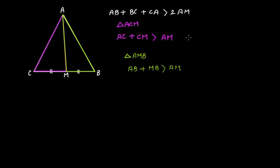So if this is equation 1 and this is equation 2, adding 1 and 2, what you will get: AC plus CM plus AB plus MB is greater than 2 times AM.